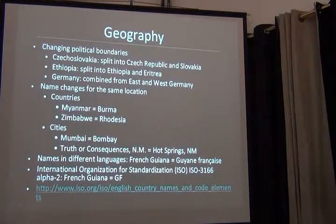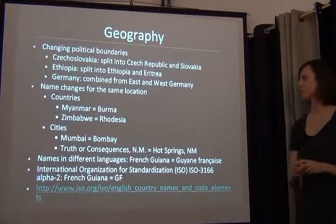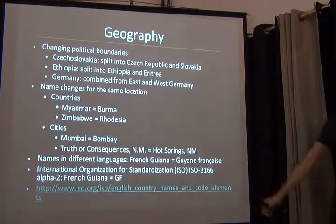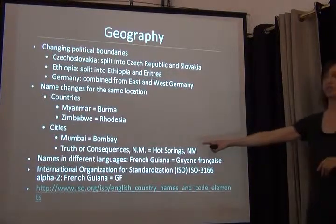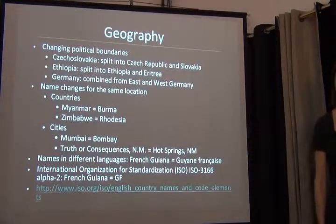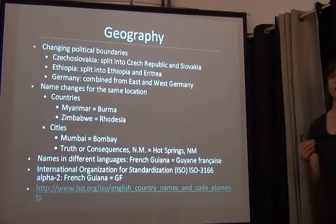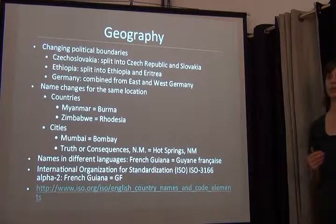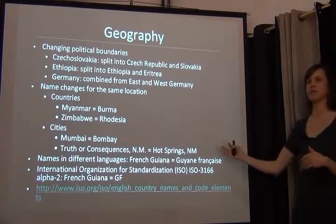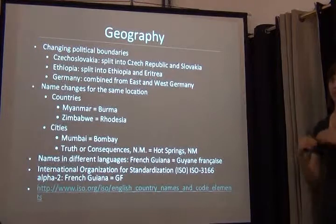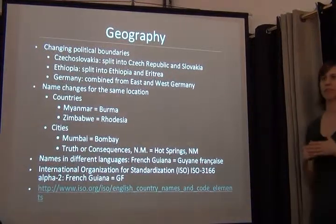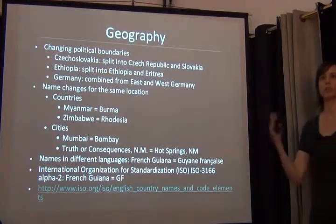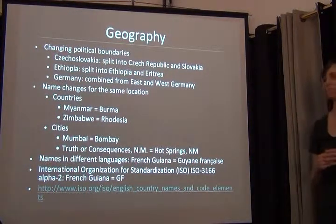The ISO 3166-2 code for country names — French Guiana would be GF. So if there were two databases, one using an English variant and one using the French version, if you were standardizing to the ISO code, we would both have GF in the database, so that when we combined a dataset, they would match up.